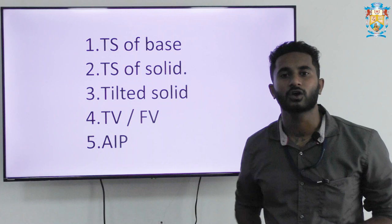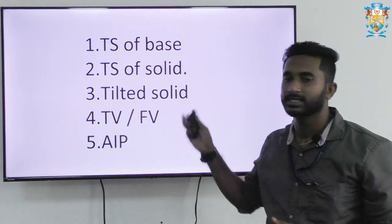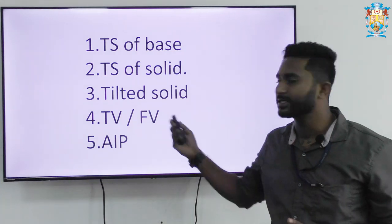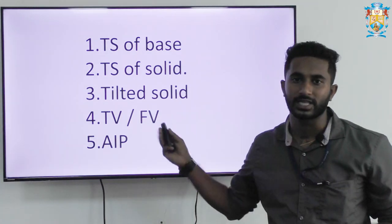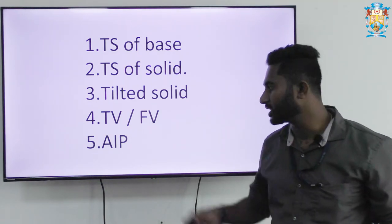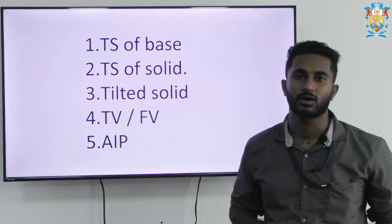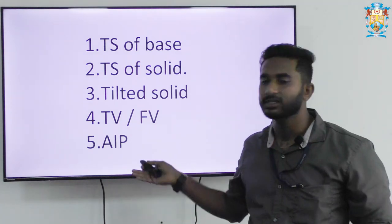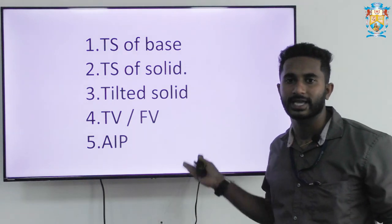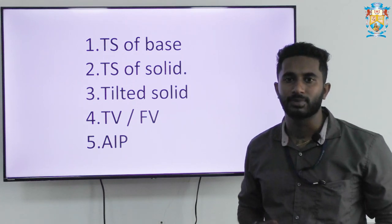In the next step, the true shape of the solid is being tilted — that is the third step. In the fourth step, either you get the front view or the top view, depending on the question received in your examination. In the fifth step, marked as auxiliary inclined plane, whatever view you get can be obtained through the normal plane method or the auxiliary inclined plane method.